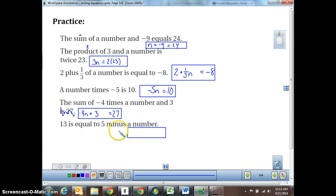And 13 is equal to 5 minus a number. So we have 13 is equal to 5 minus that unknown number. I hope you were able to get those. I hope as more practice goes on, they're becoming a little easier for you.